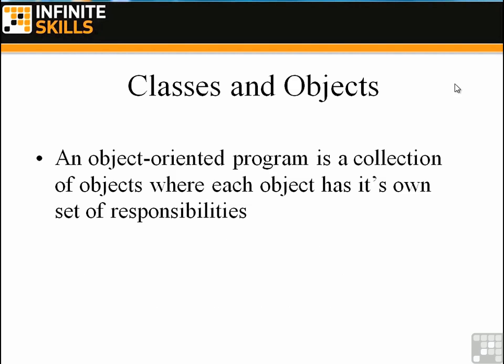An object-oriented program is a collection of objects where each object has its own set of responsibilities. Rather than try to mix everything up together, when we write an object-oriented program we create objects that have strict sets of responsibilities. This way, when something goes wrong in a program, we know where to look to find the error — the error is in the object that's responsible for that behavior.